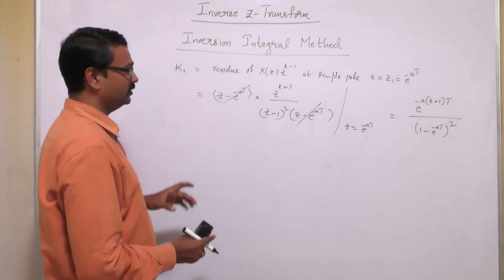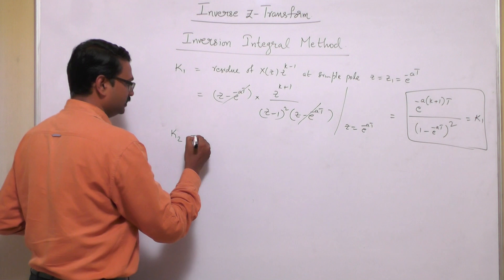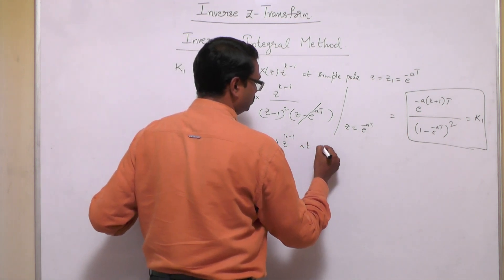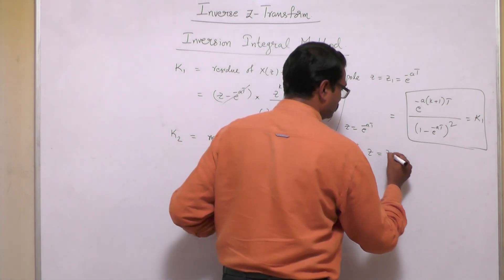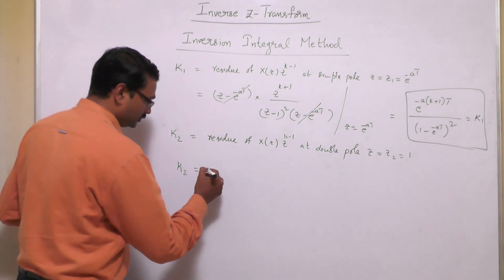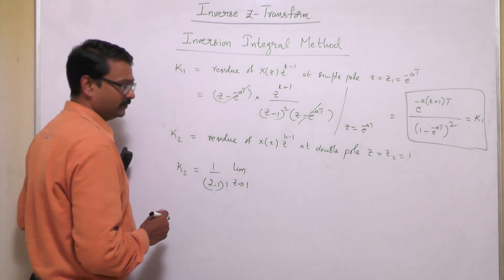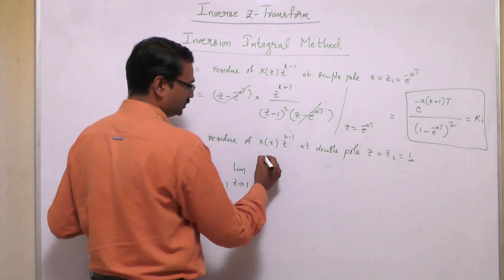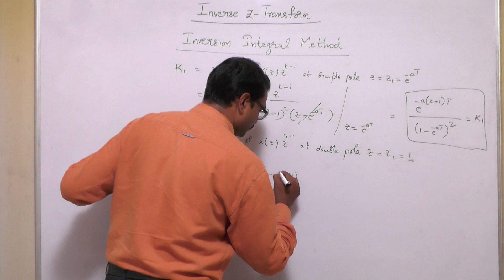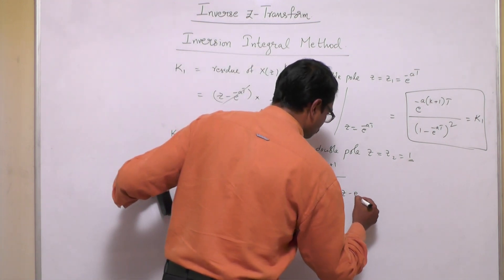K2 is the residue of X(Z)·Z^(k-1) at double pole Z = Z2 = 1. Since it is of order 2, K2 = (1/(2-1)!) · limit as Z→1 of d/dZ of [(Z-1)² · Z^(k+1) / ((Z-1)² · (Z-e^(-aT)))]. Canceling (Z-1)², we differentiate Z^(k+1) / (Z-e^(-aT)) with respect to Z using the u/v rule.